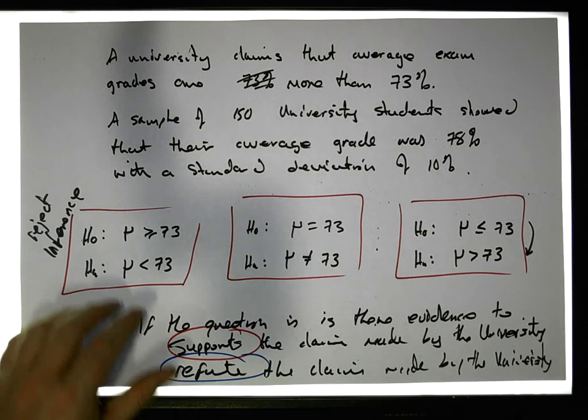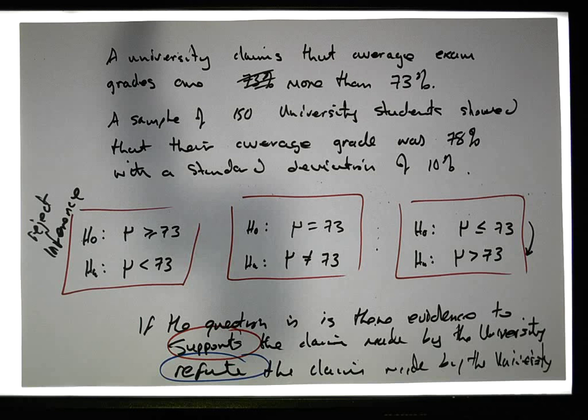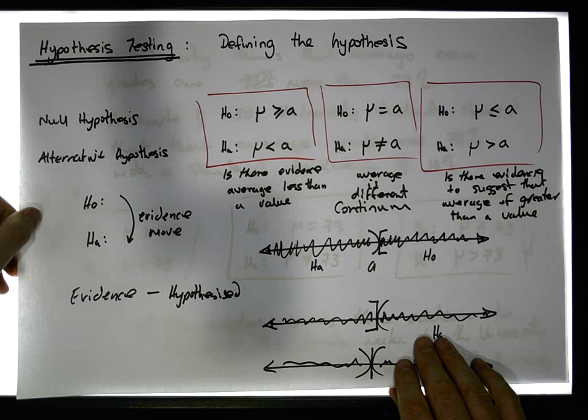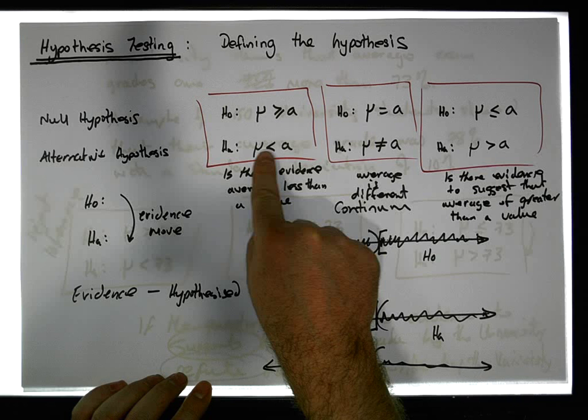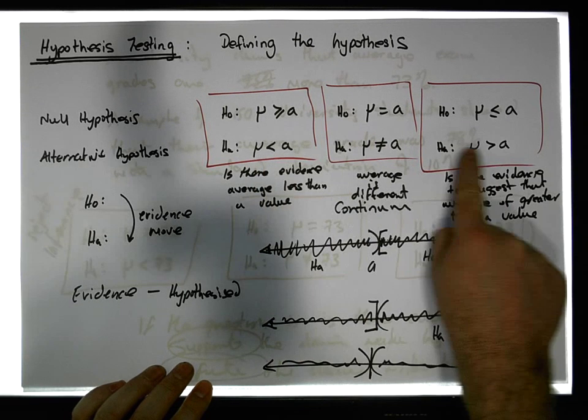But let's just say from a default position, the alternative is always what you're trying to prove. Well, the alternative is what you can prove, if that makes sense.